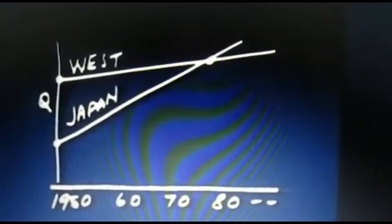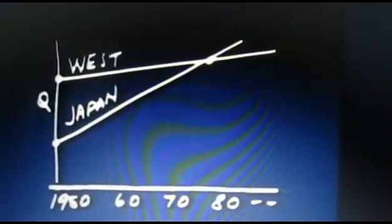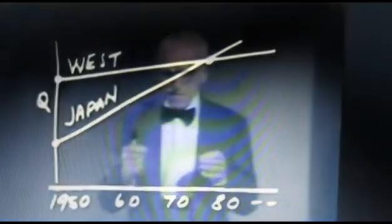My estimate is that by the mid-1970s they had equaled western quality. That revolution has progressively made Japanese products saleable, then competitive, and now in some product lines superior in quality. These quality improvements were nearly always accompanied by cost reductions.